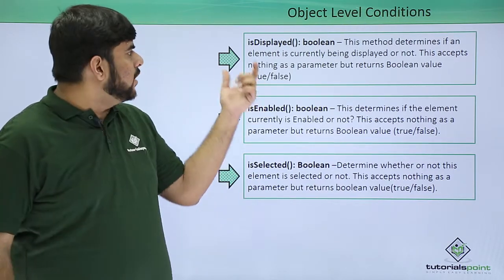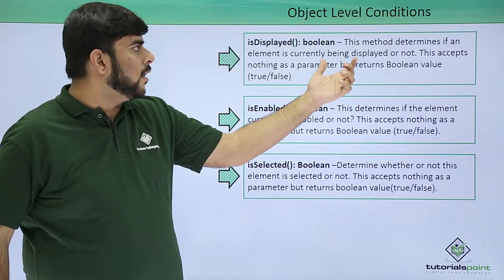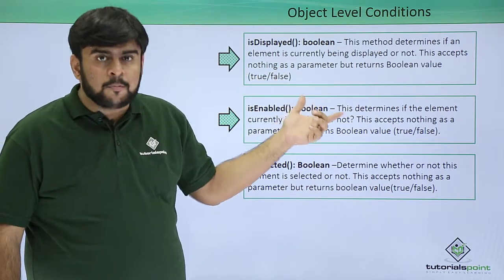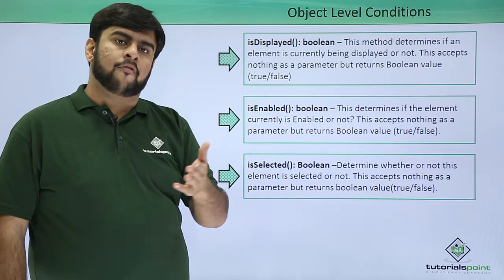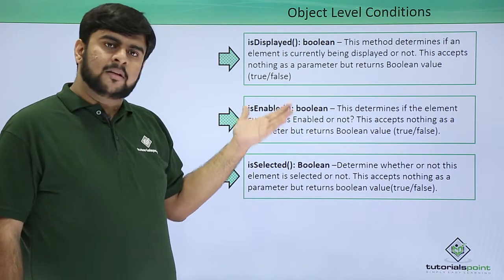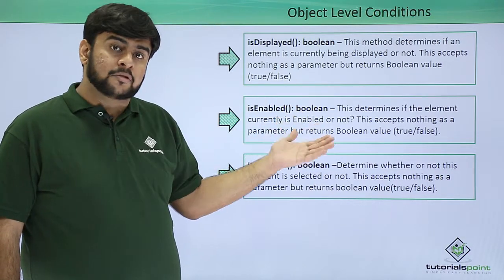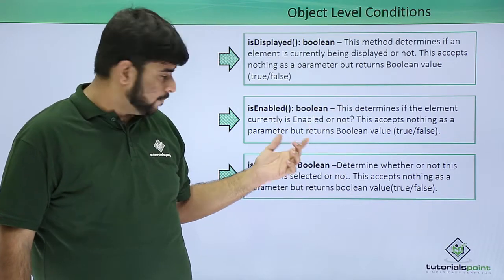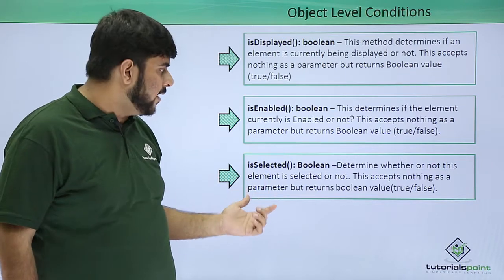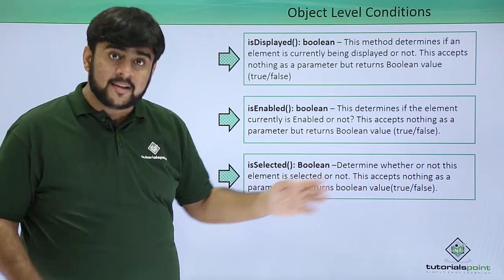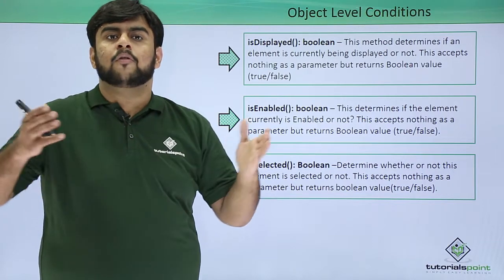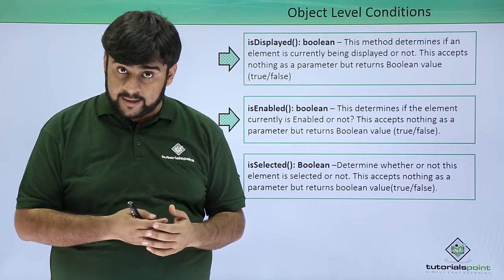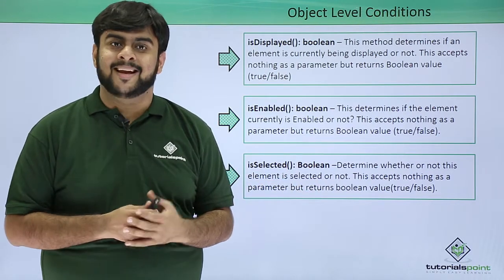The first method is isDisplayed — this determines if an element we are working upon is displayed or not, and it returns either true or false. The second is isEnabled — it helps us identify if the element we want to work upon is enabled or not. The last is isSelected — this helps us identify which items have been selected out of a radio group or multi-select options, using the isSelected command.